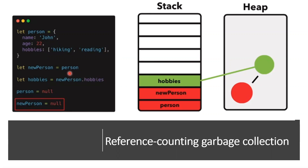Later on, person is assigned to a new reference, so we have two references — person and new person — pointing to this person object in the heap. Then a hobbies reference is pointing to the hobbies array. Now we forcefully make these null — we remove those references. In the code, after using the person object we can make it null. The reference counting algorithm counts references: if it picks an object in the heap and finds no references pointing to it, it removes those objects.